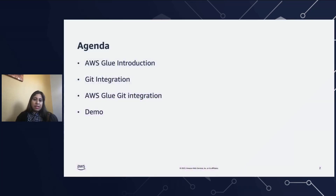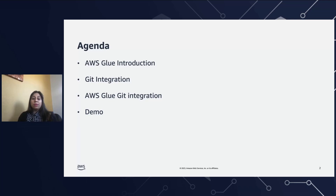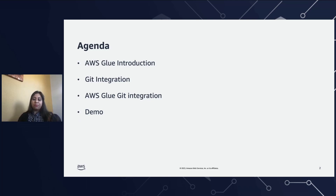Let's go to the agenda first. Today we're going to introduce AWS Glue ETL tool, and then talk about Git integration. We're going to focus more on Git integration because AWS CodeCommit is already integrated directly with AWS Glue. We'll also talk about what we can achieve with Glue and Git integration, and do a little demo showcasing how you can pull or push script versions from GitHub.